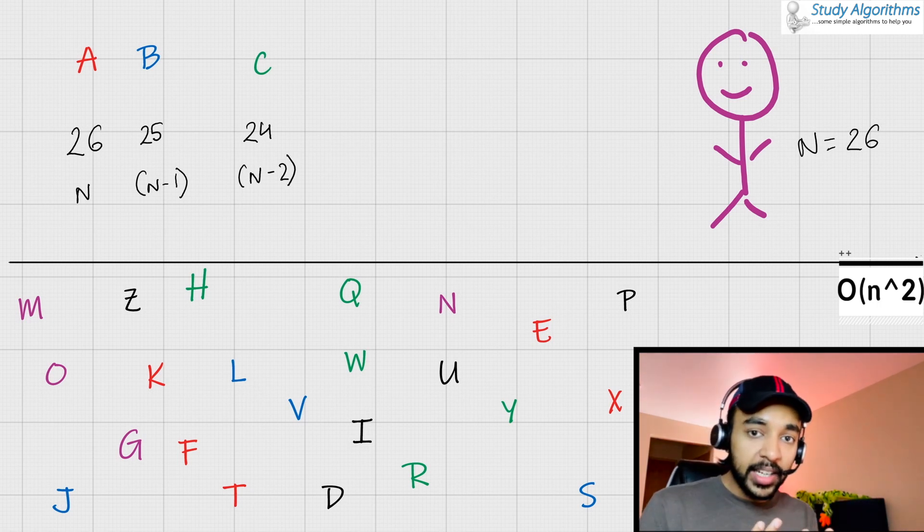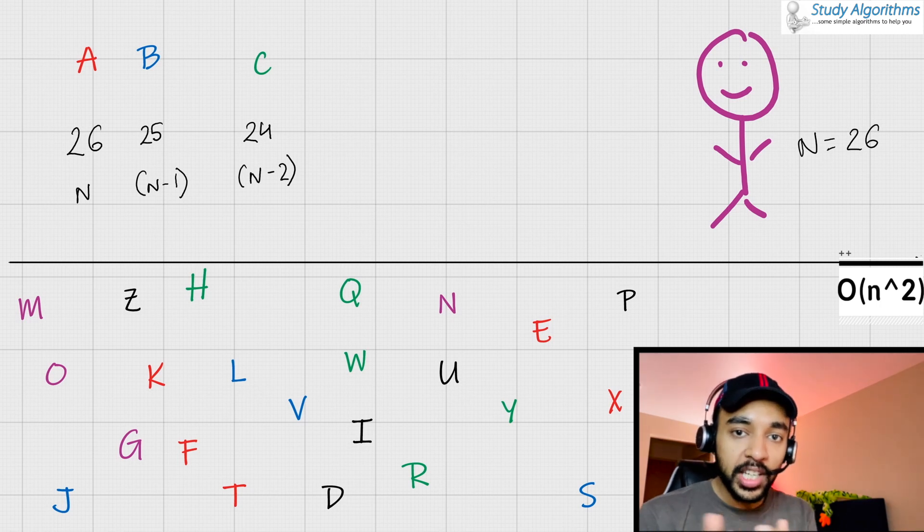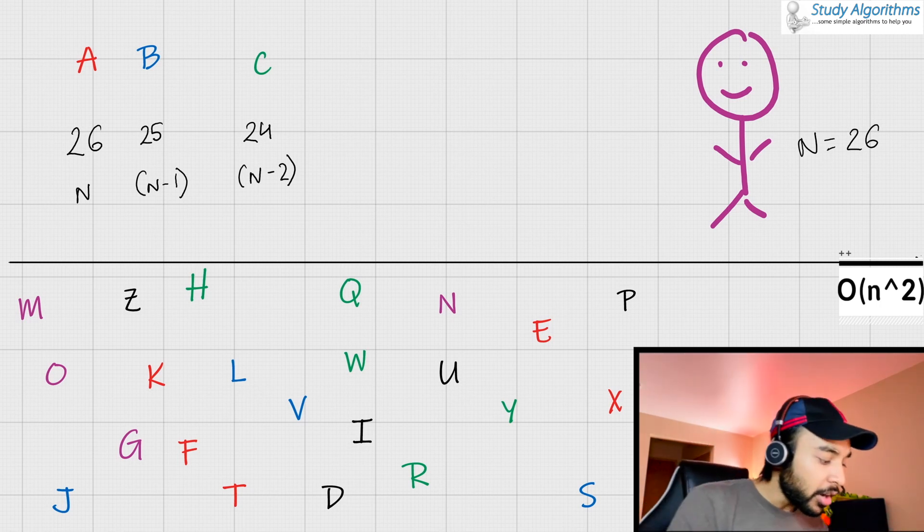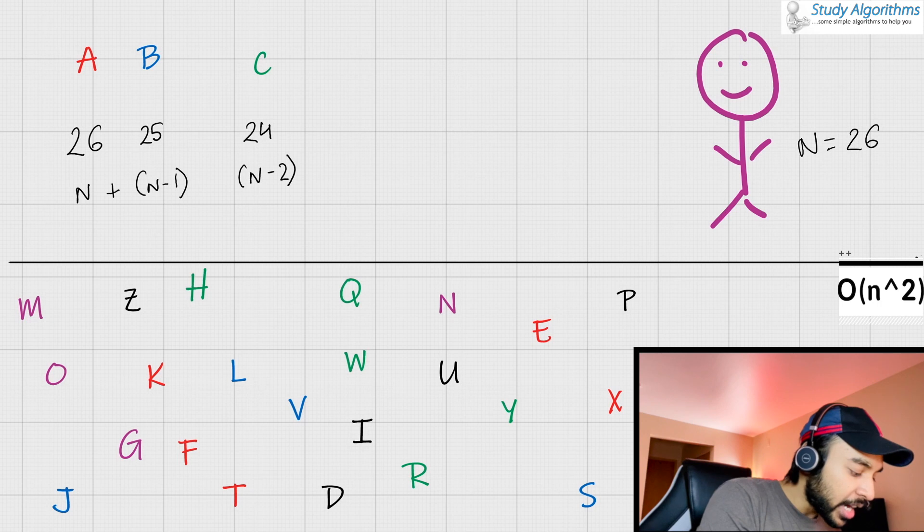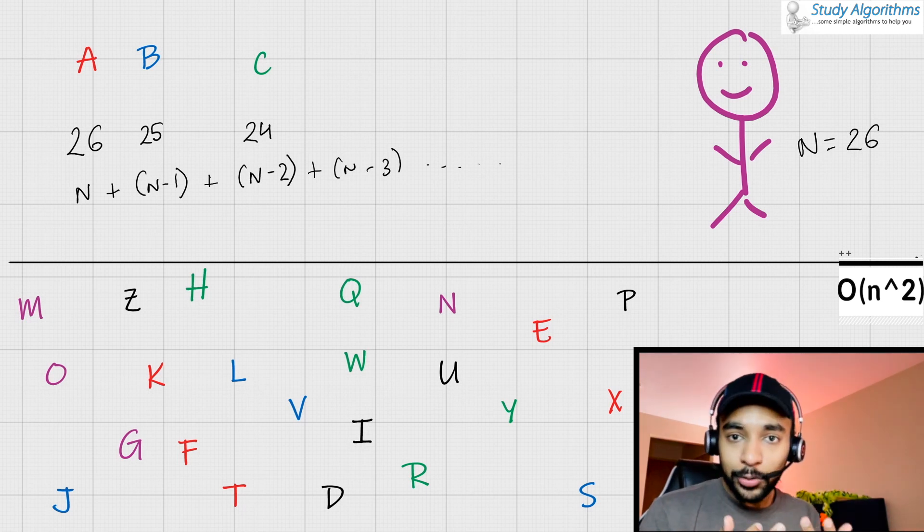Going forward, you get the idea that you would be looking through 23, then 22, then 21, then 20 characters and so on. Or I can say that first I look through N characters, then N minus 1, then N minus 2, then N minus 3 and so on. This sounds like an AP.